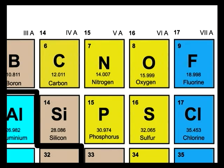Some periodic tables are more elaborate than others. Your book might have the name spelled out in addition to the symbol. Fancier tables on the internet or that you could purchase might even have the boiling point and melting point, lots of information. But for a chemistry class, really the atomic number, the atomic mass, and the symbol are the most important things.